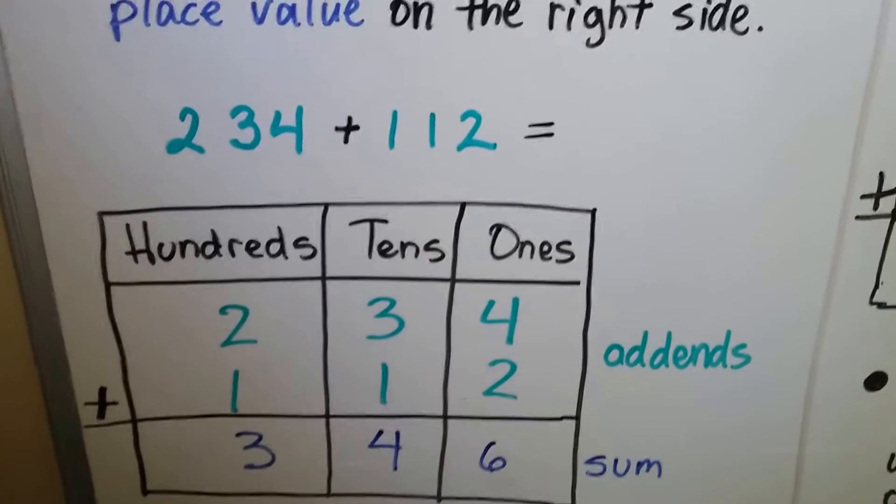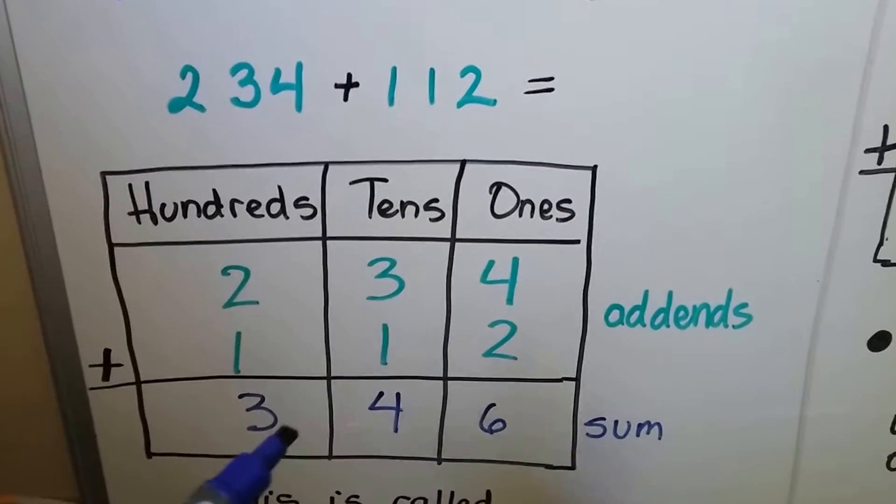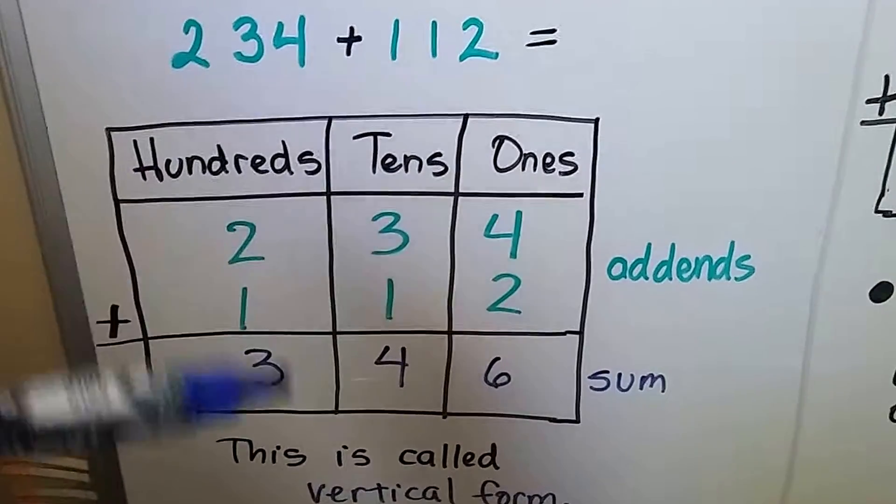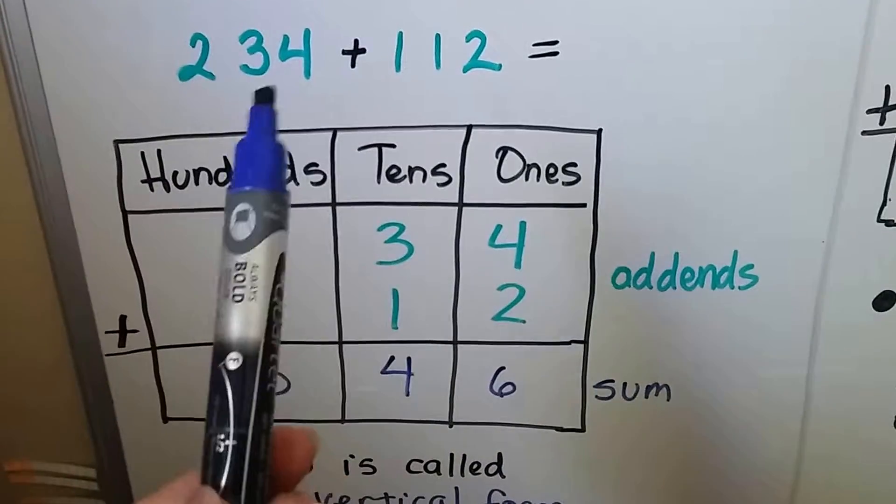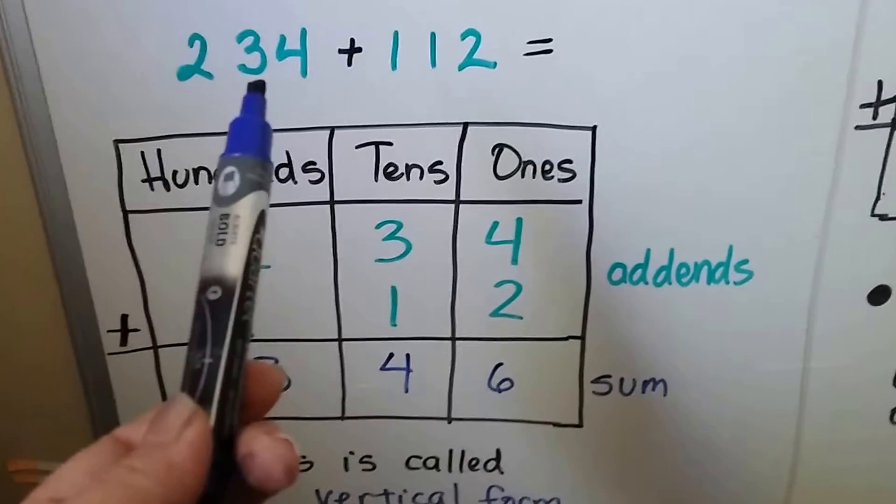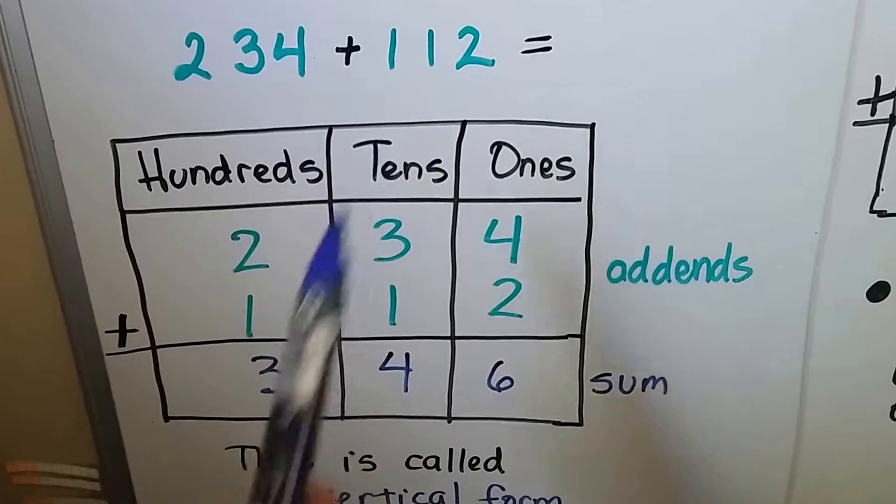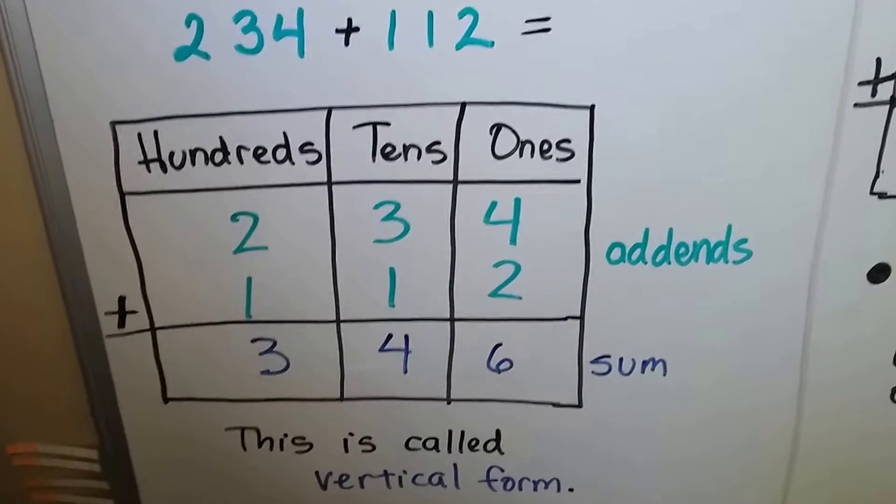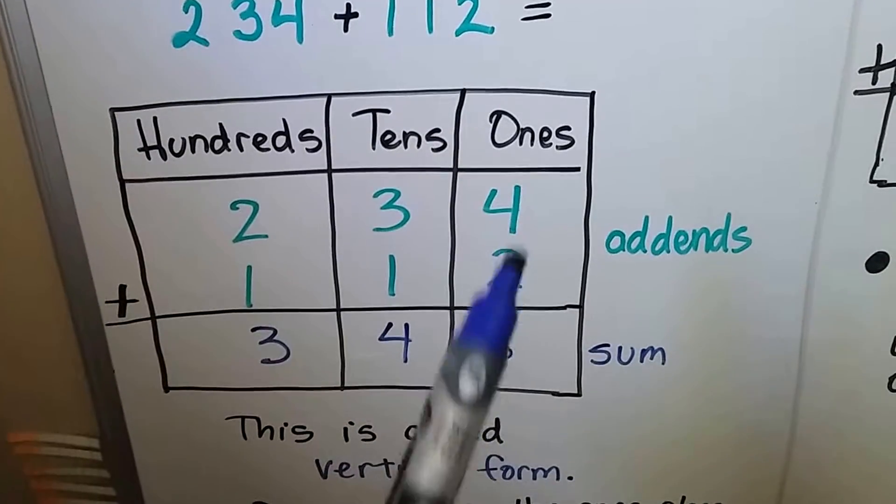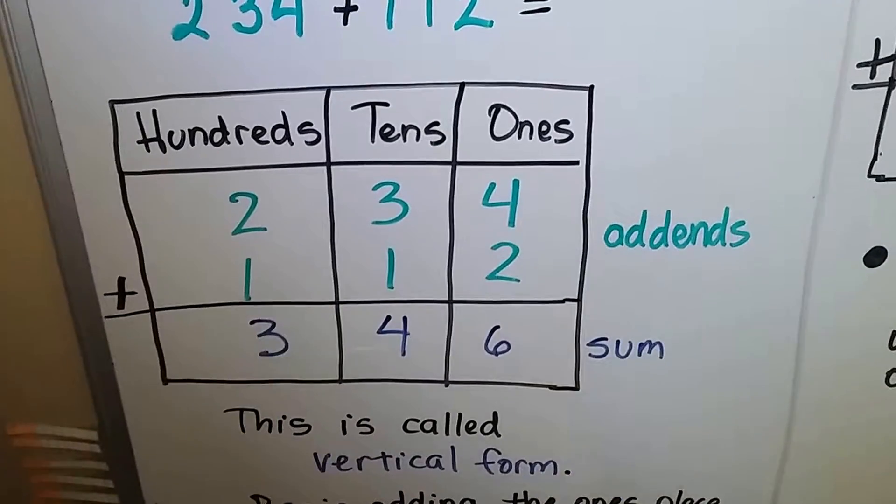So to add 234 plus 112, this is in number sentence form, we can do it in vertical form and stack them. We stack the 4 on top of the 2 because those are the ones place, the 3 on top of that 1 because that's the tens place and the 2 on top of that 1 because that's the hundreds place. And we just add them starting with the ones place. 4 plus 2 is 6, 3 plus 1 is 4, and 2 plus 1 is 3.